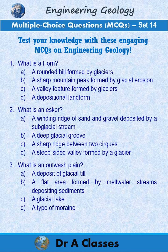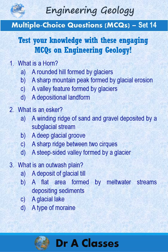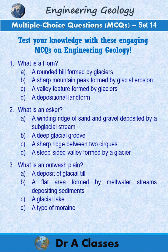Question 1: What is a horn? A. A rounded hill formed by glaciers. B. A sharp mountain peak formed by glacier erosion. C. A valley feature formed by glaciers. D. A depositional landform.